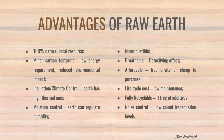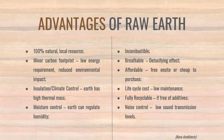Some advantages of building with raw earth: it is a 100% natural and local resource; it has a minor carbon footprint, low energy requirement, and reduced environmental impact; it has natural insulation and provides climate control, as it has high thermal mass; it provides moisture control and can regulate humidity; it is incombustible; it is breathable and has a detoxifying effect; it is affordable — free on-site or cheap to purchase — with low lifecycle costs and maintenance; it is fully recyclable if free of additives; and it also provides some noise control.